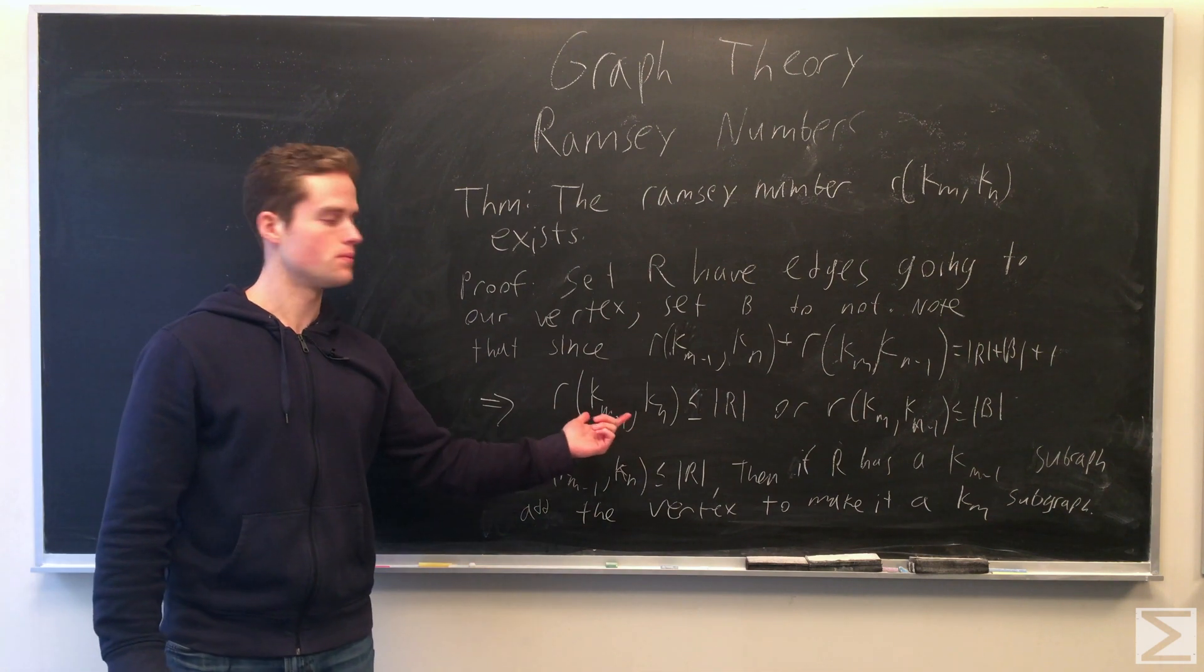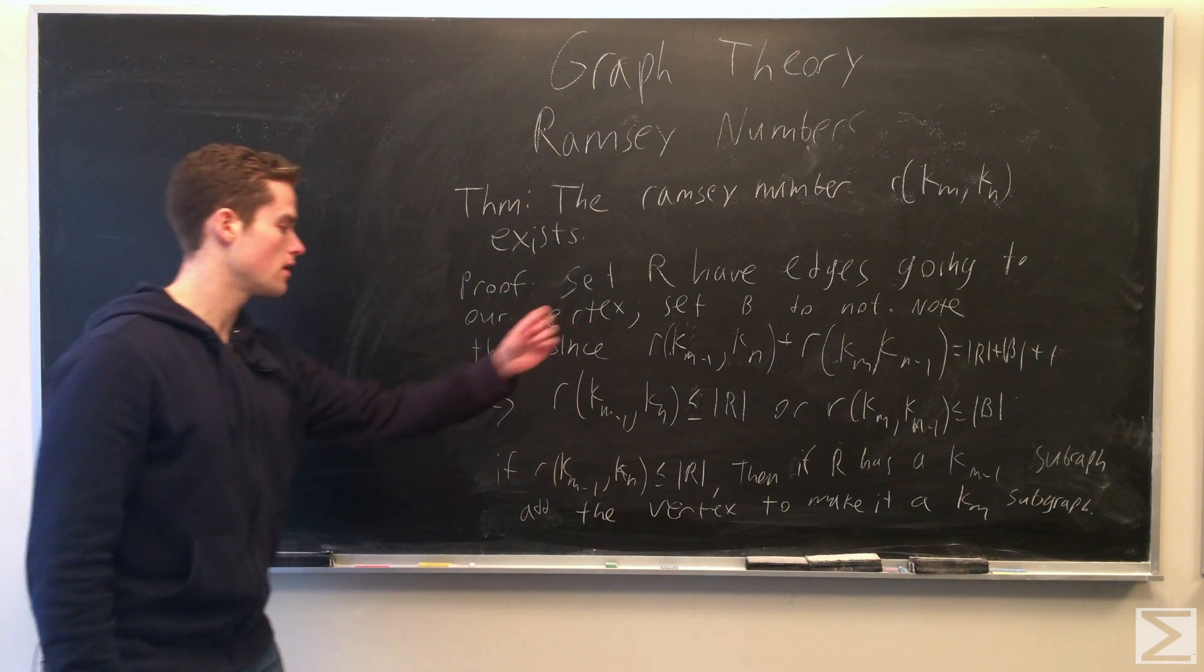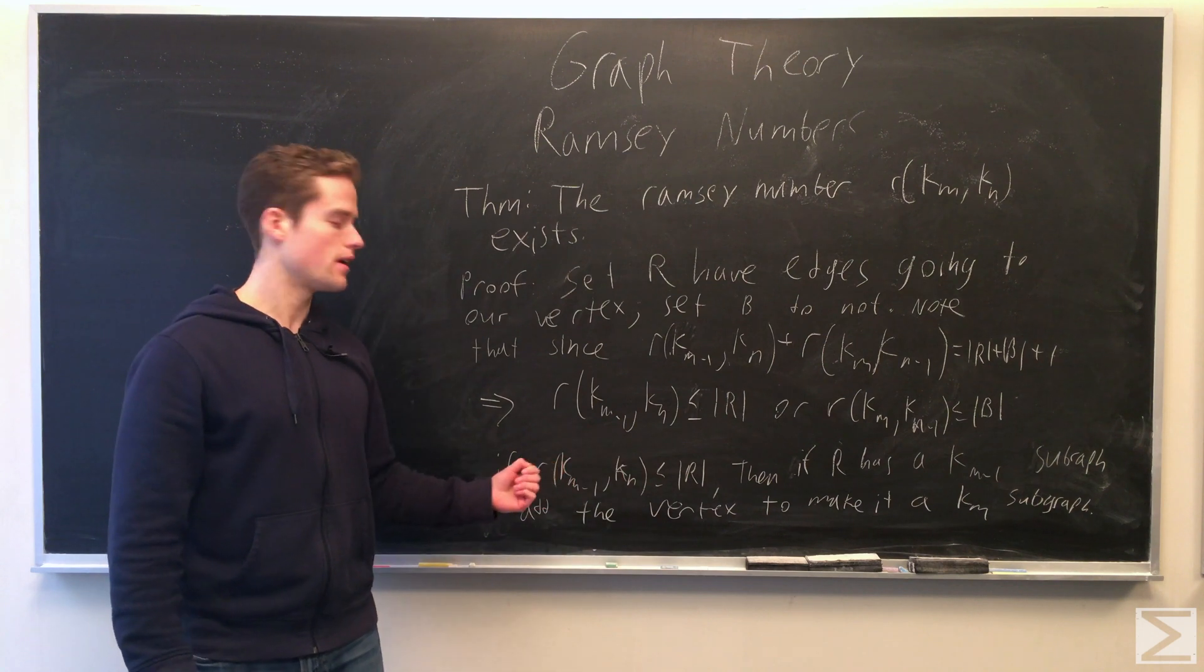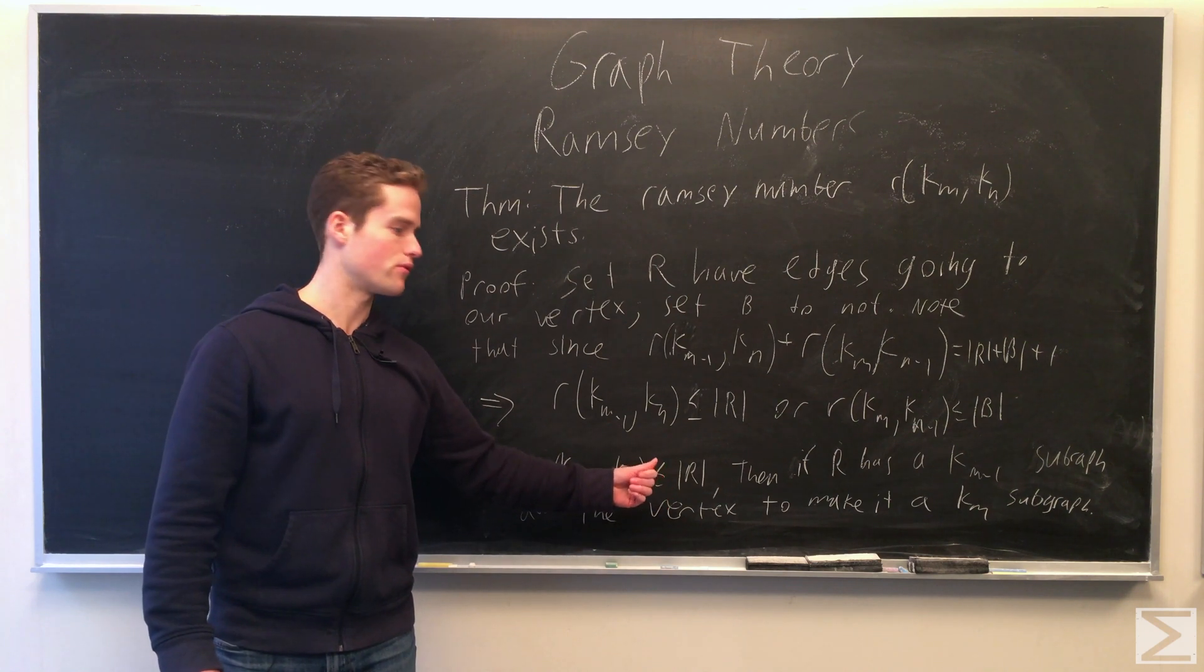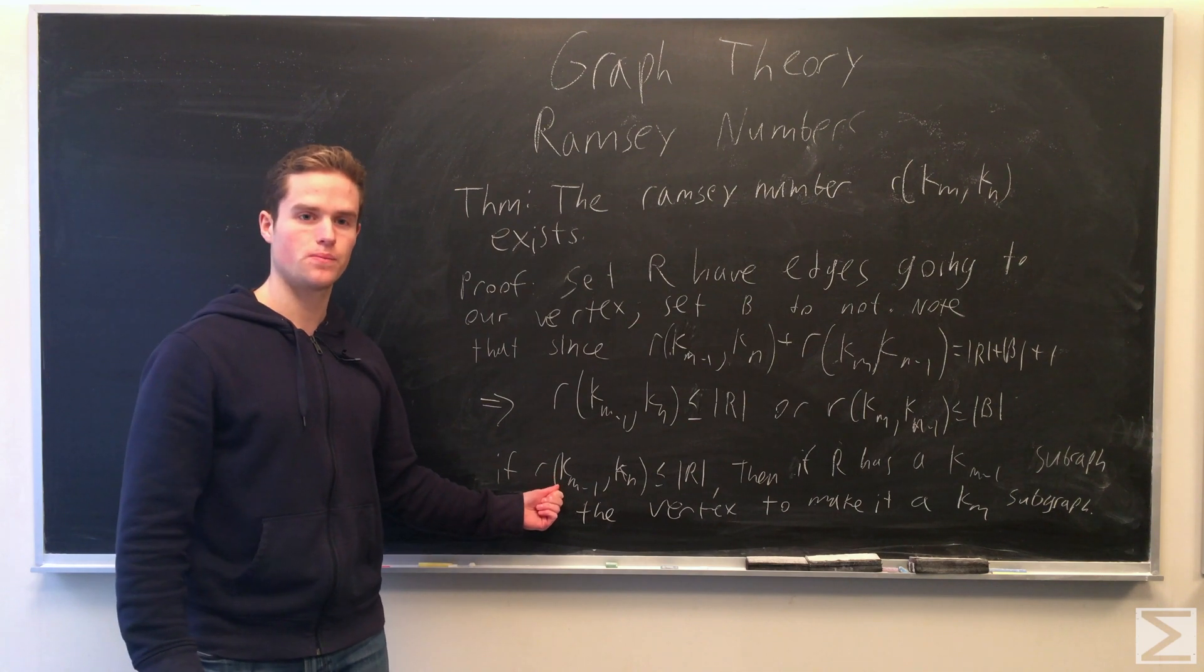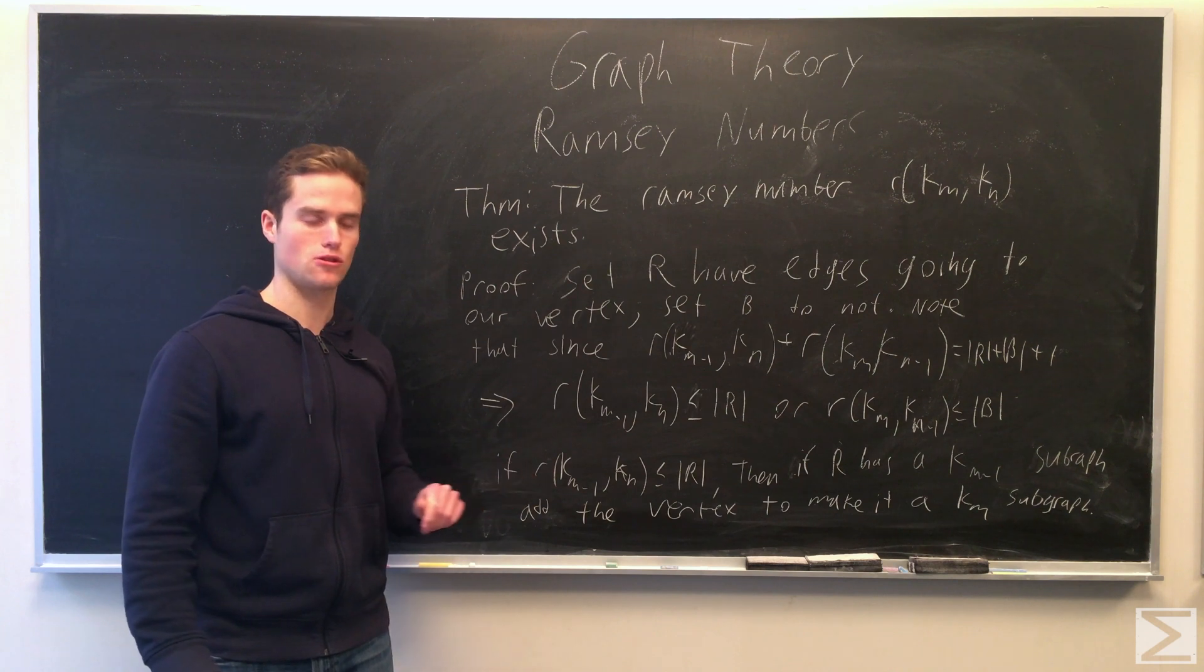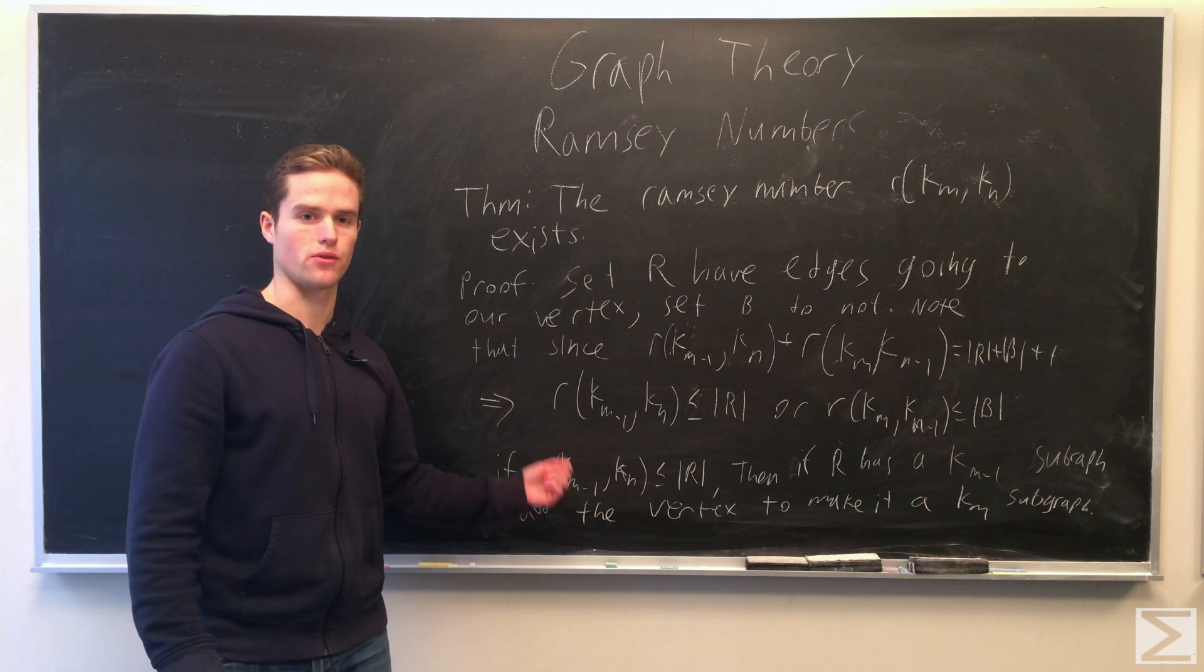So if we assume that the magnitude of R is greater than or equal to R(k_m minus 1, k_n), note that because the magnitude is greater, we can find either k_m minus 1 or k_n in the complement of the subgraph of vertices in R. If we can find the complete graph k_m minus 1, then we add our vertex that has edges going to all of R. We have a graph of k_m minus 1 vertices that all have edges to each other. If we put the vertex in this graph, we have a complete graph k_m.